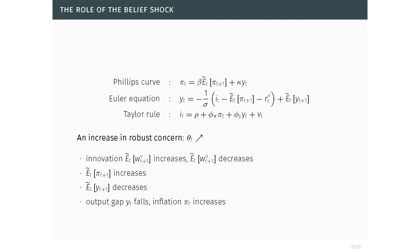How does the model work? When the robust concern theta increases — you become more pessimistic — the expected innovation under the distorted measure of the monetary policy shock increases (like a positive monetary policy shock) and there is a negative shock to productivity. This drives inflation up and the output gap down, producing an adverse effect on utility. Current variables y and pi then adjust so the equilibrium equations are satisfied.